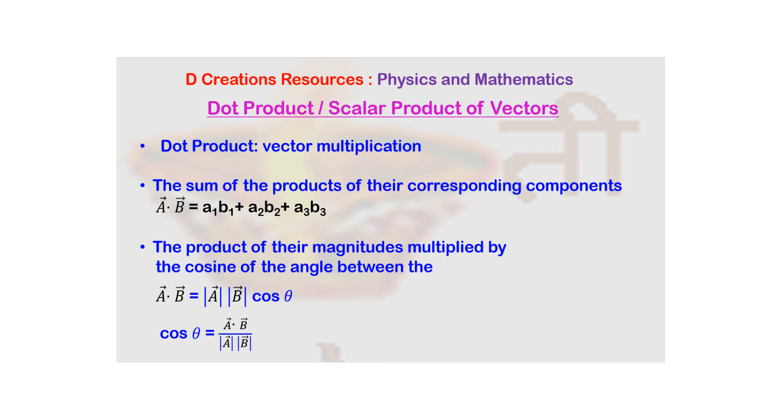So I will repeat. If the vector a bar is a1 i cap plus a2 j cap plus a3 k cap, and vector b bar is b1 i cap plus b2 j cap plus b3 k cap, you are basically multiplying the corresponding components and adding them up. So the answer is a1 b1 plus a2 b2 plus a3 b3.